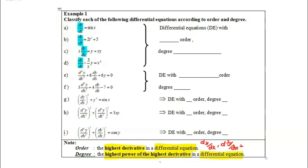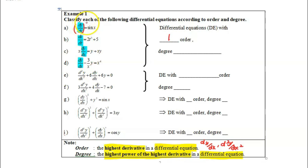When we have first derivatives, the order will be 1 — first order. And what is the degree of all these equations? For instance, in equation A, the differential equation has the first derivative with power 1. So the highest derivative has power 1, therefore the degree is also 1. This applies to equations B, C, and D as well.